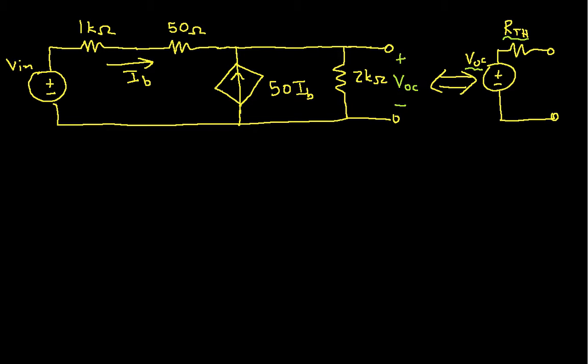And it looks like probably the easiest way to do this analysis is to apply Kirchhoff's current law to this node. And if I do that, I get that the sum of the, and let's label this as I2.